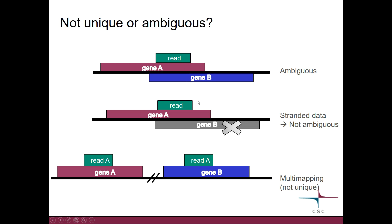However, if our data was produced with a stranded protocol, we would be able to resolve this ambiguous situation. Multi-mapping then means a situation where the read maps to several places in the genome. Here the read maps to two different genes located in different parts of the genome, so this is not a unique mapping read.